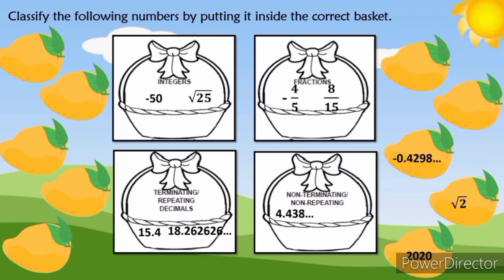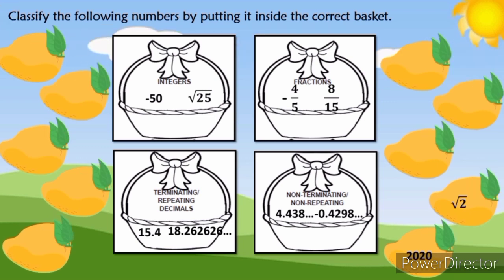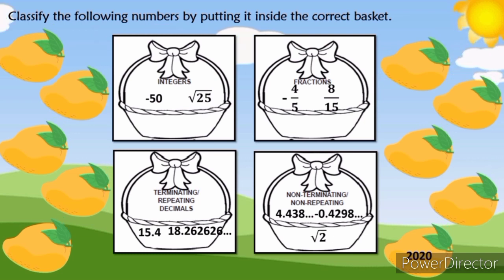How about square root of 25? The square root of 25 is an integer. How about negative 0.4298 with three dots? Yes, that is non-terminating or non-repeating decimal. How about square root of 2? The square root of 2 is non-terminating or non-repeating decimal. For the last number, we have 2020. Correct, that is an integer.